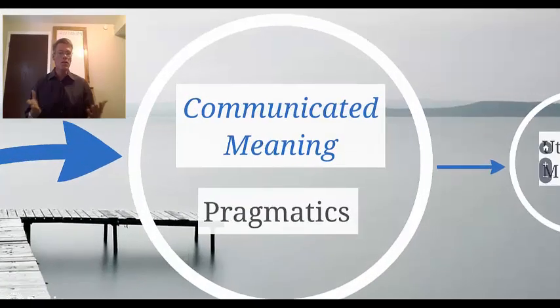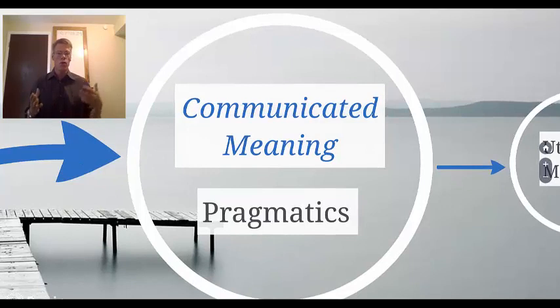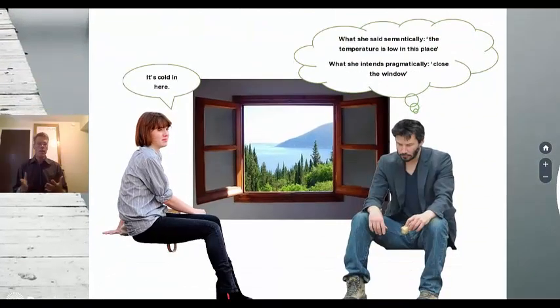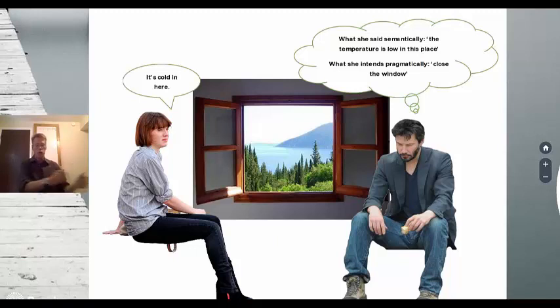On the other side, we've got communicated meaning, which is pragmatics. We're going to be talking more about pragmatics in some future videos. But if we take that same sentence, it's cold in here, but now we're going to look at it as an utterance, not as a sentence in and of itself, but as something that's actually uttered by a particular person in a particular context to a particular other person with a particular purpose.